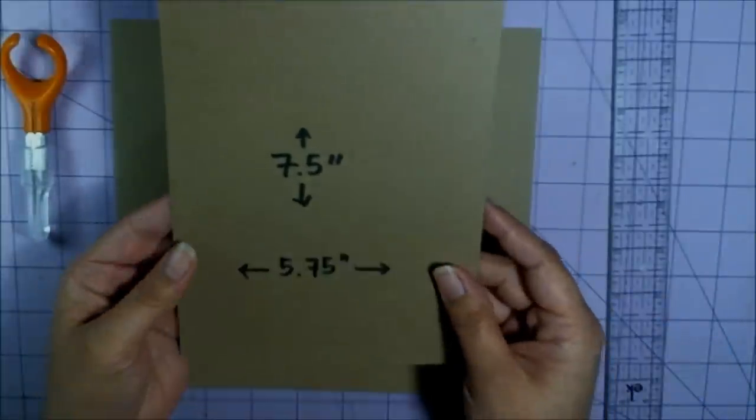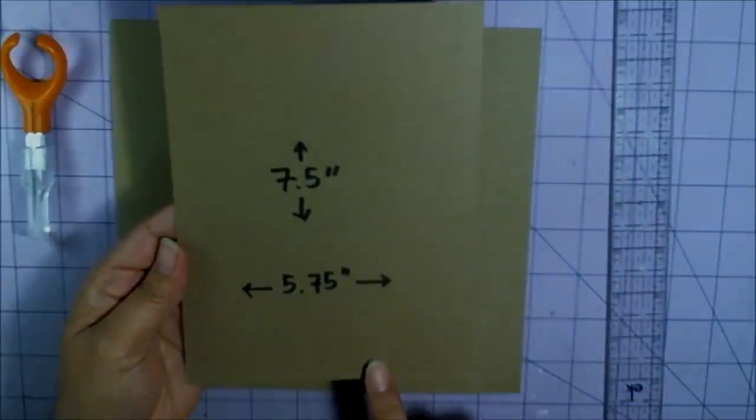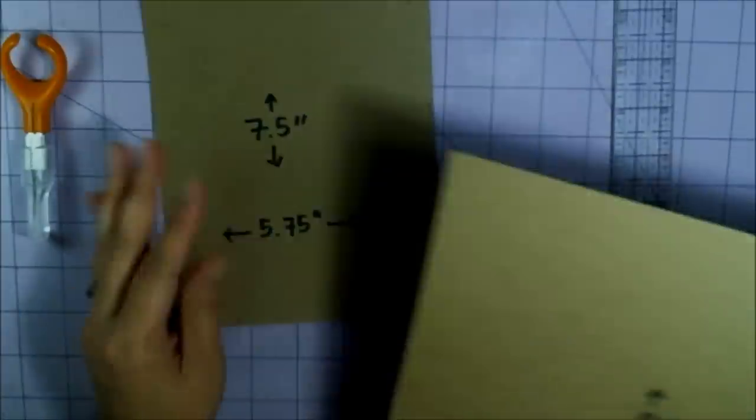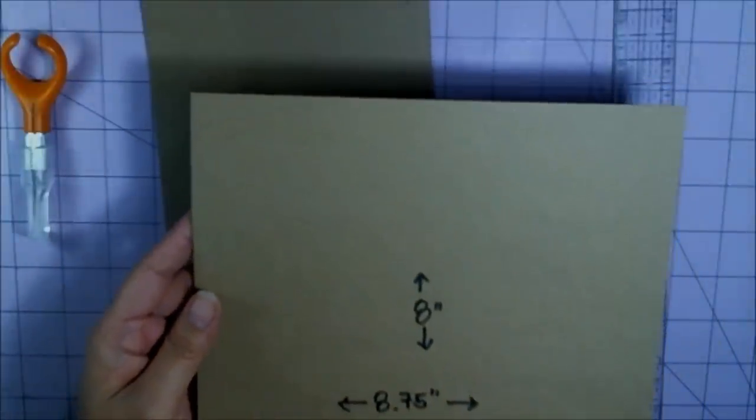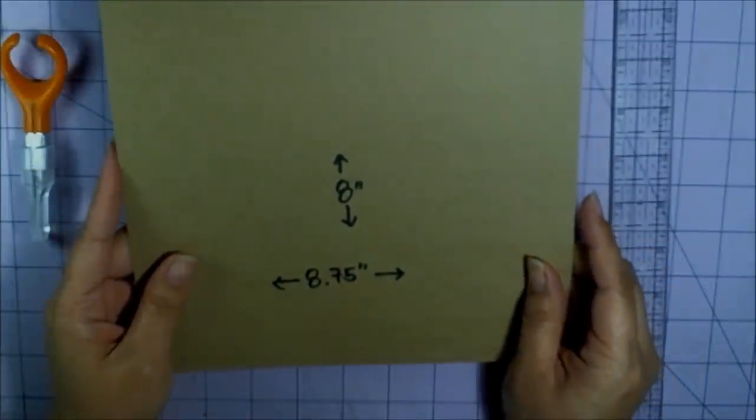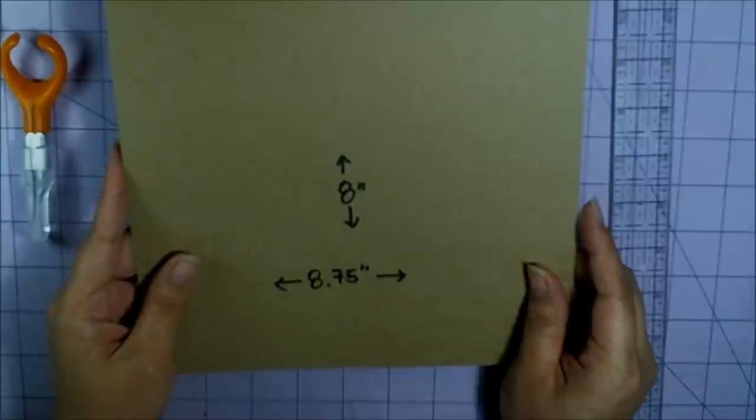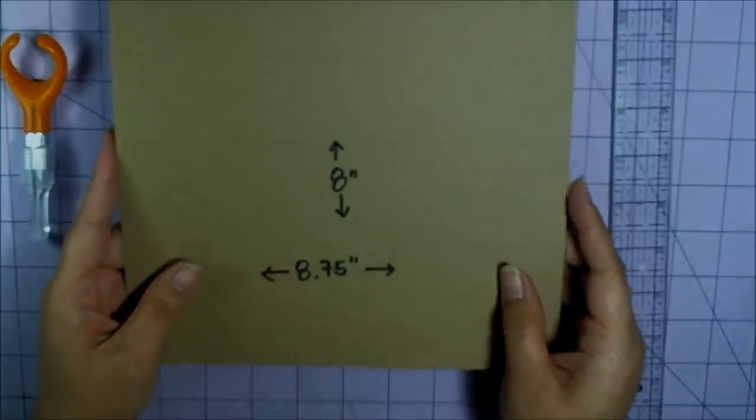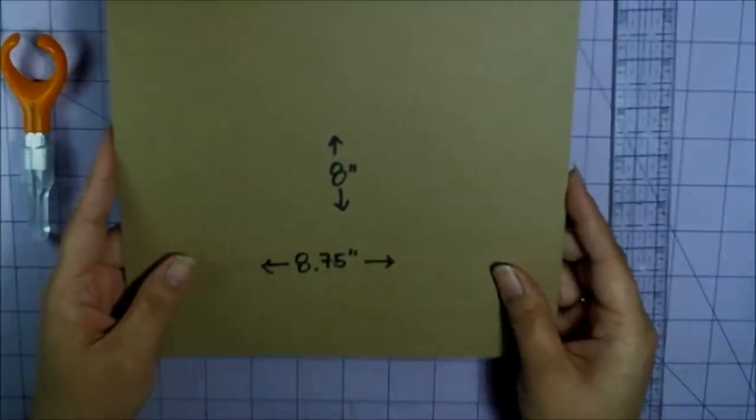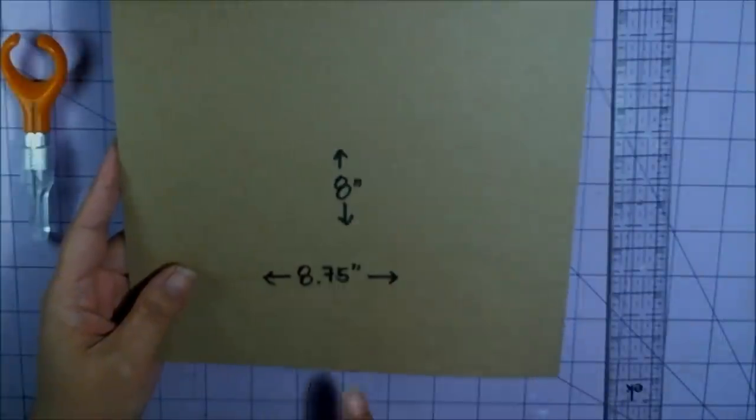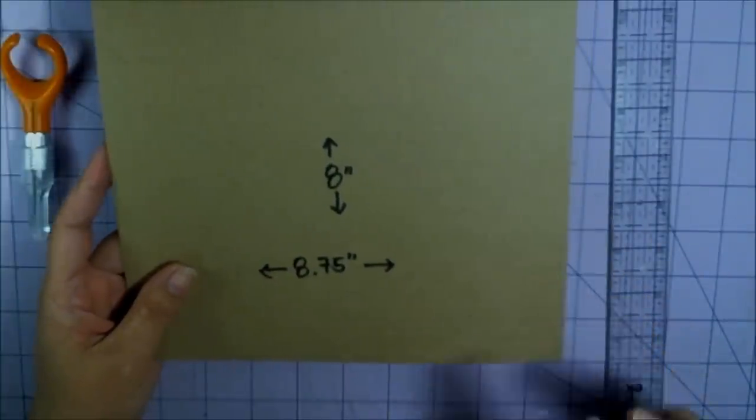One piece is going to have to be 7.5 inches tall by 5.75 inches wide. The second piece is going to be 8 inches tall by 8.75 inches wide.